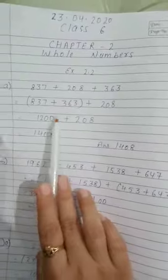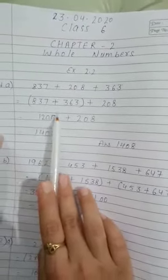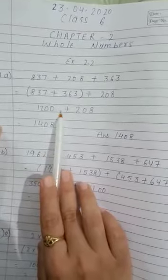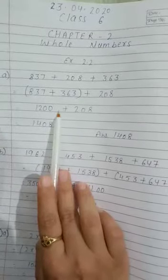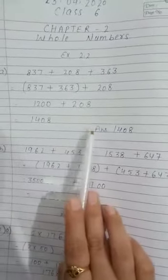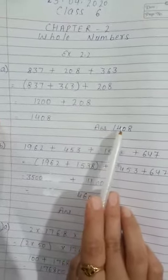Why we want here 0 at the 1s place? To make our addition easier and also according to our question it is given by suitable rearrangement. That's why we are doing like this and here our answer is 1408.